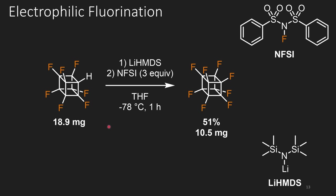The last step for this route was to lithiate that position with a strong base called lithium HMDS. Once lithiated, it's treated with NFSI, which is an electrophilic fluorinating agent — it acts as an F⁺ source. This anion attacks the fluorine of NFSI, putting the eighth fluorine on. This is the method highlighted in the body of the manuscript, and they achieved this in 51% yield, giving them 10.5 milligrams of perfluorocubane.